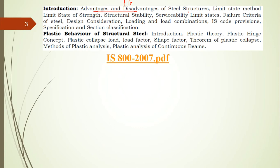Write down the advantages and disadvantages of steel structures in numbered form. The second topic is limit state method — that is, limit state of strength, limit state of serviceability, and stability. Limit state method in steel accounts for three things: strength, stability, and serviceability. All these criteria are in IS 800:2007. From the code book itself, write a note in point-wise manner on limit state method of design of steel structures.